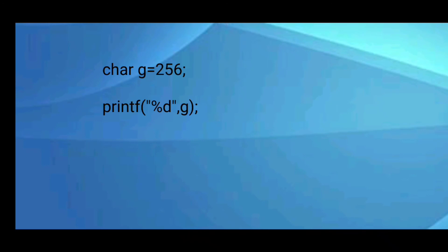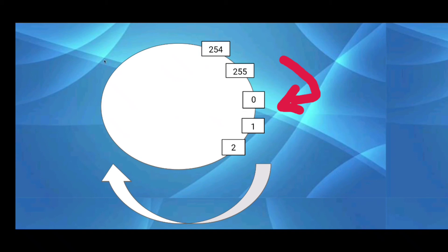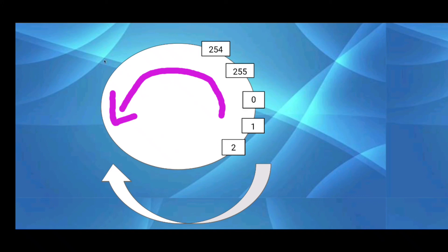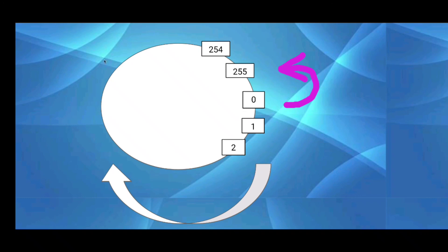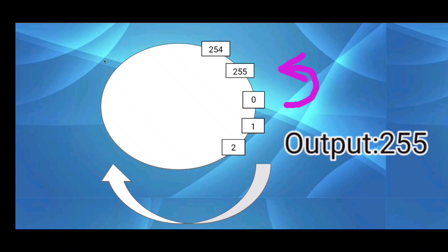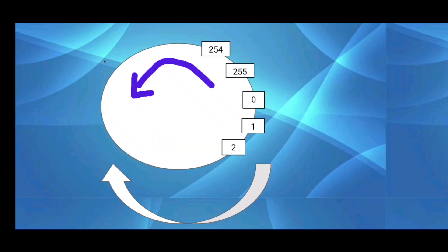Now variable g holds 256. In positive values we can store up to 255, so this wraps around and will print 0 to the output screen. In unsigned char, if you store a negative value, it will wrap in the anti-clockwise direction but will print only positive values. For example, if unsigned char is equal to minus 1 and you print it, this will print 255. If it is a positive value it moves in the clockwise direction; if it is a negative value it moves in the anti-clockwise direction.